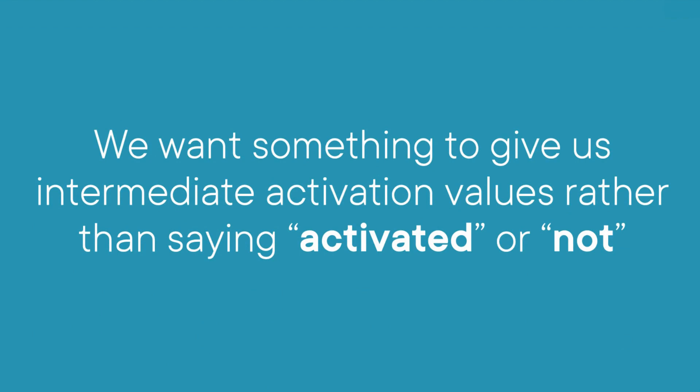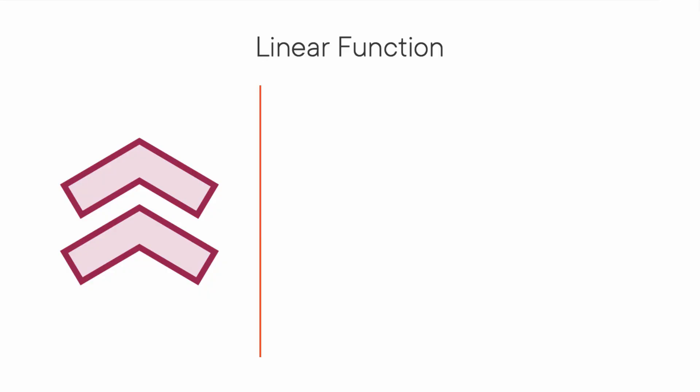Actually, we want something to give us intermediate activation values rather than saying activated or not. If you're thinking about a linear function, you are right. It can help us. Consider the equation of a straight line like this one. Here the activation is proportional to the weights and input. Now it's not binary activation because it gives a range of activations. That's what we're looking for.